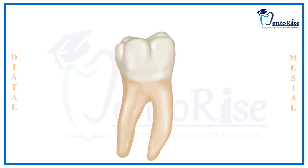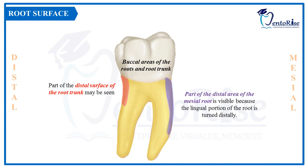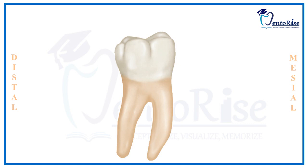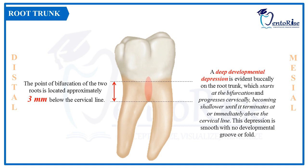Moving to the root: from the buccal aspect we can see the buccal areas of the root trunk and the root. Some portion of the distal surface of the root trunk, demarcated in red, and some part of the distal area of the mesial root, demarcated in purple, are also visible from this aspect. The root trunk length from the cervical line to the bifurcation is approximately 3 mm. In the root trunk, a deep developmental depression starts at the bifurcation and progresses cervically, becoming shallower until it terminates at or immediately above the cervical line. This depression is smooth with no developmental groove or fold present in it.